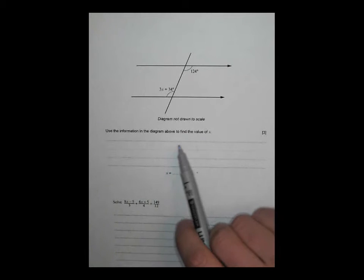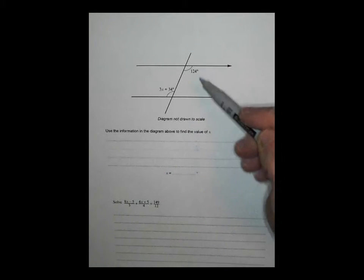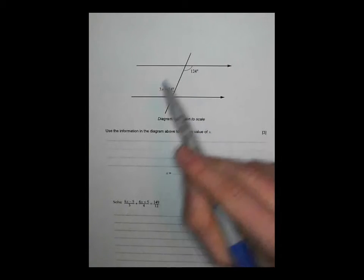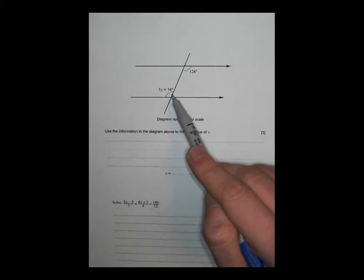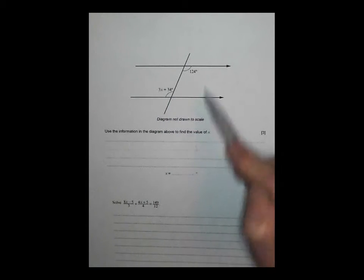Use the information in the diagram above to find the value of x. We've got an angle of 124 there, a mystery angle of 3x plus 34, and a pair of parallel lines.